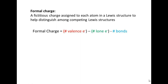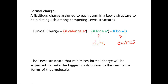How we calculate formal charge: we take the number of valence electrons that the atom starts with, and we subtract from it the number of lone electrons and the number of bonds it's involved with. The number of lone electrons is easy to remember because we just look at the number of dots around that atom. For the number of bonds, we just look at the number of dashes around that atom. So we can simplify this to: take the number of valence electrons it starts with and subtract the dots and dashes around it in that structure. The Lewis structure that minimizes the formal charge will be expected to make the biggest contribution to the resonance form of that molecule.